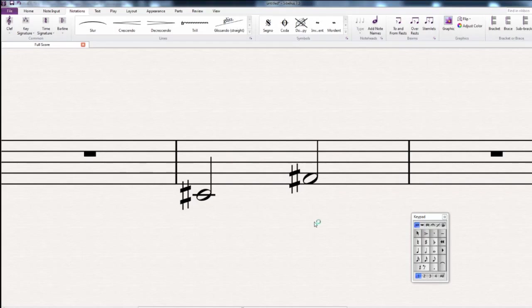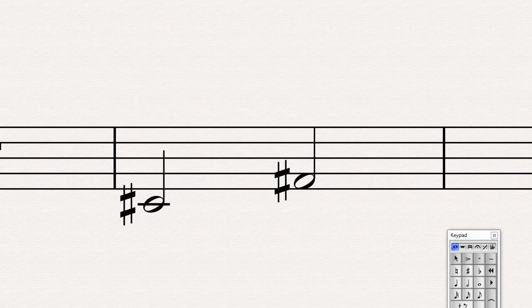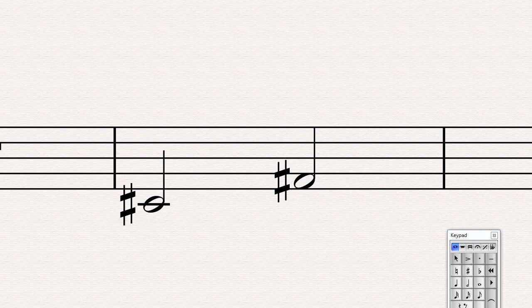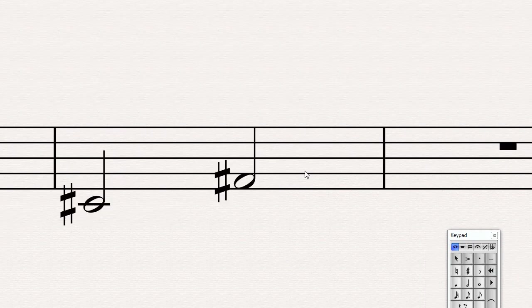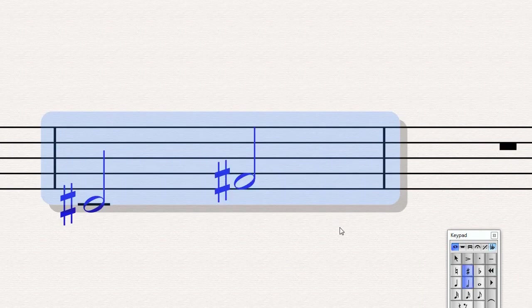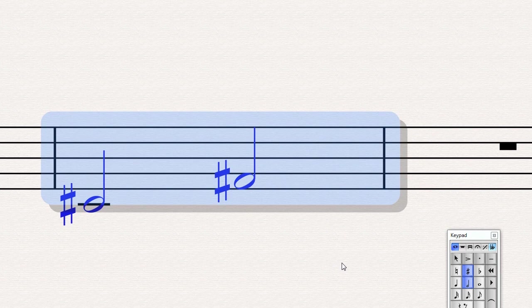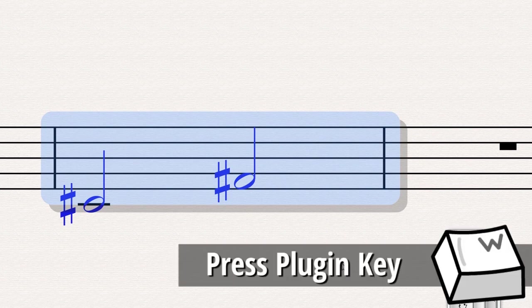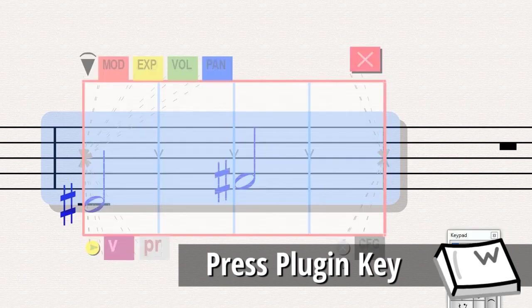Once we have assigned the keyboard shortcut, we can start working with the plugin. This plugin works on a bar basis, so in order to activate it, we have to first select a bar by clicking on it, and Sibelius will paint it in blue, and then we press the plugin key, in my case the W, but use whichever key you have chosen. One strike, and the interface will appear.